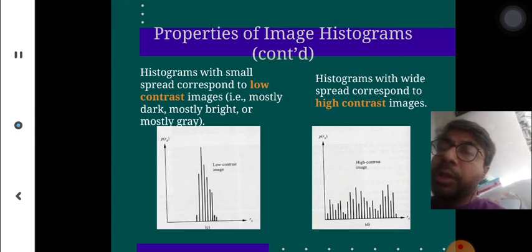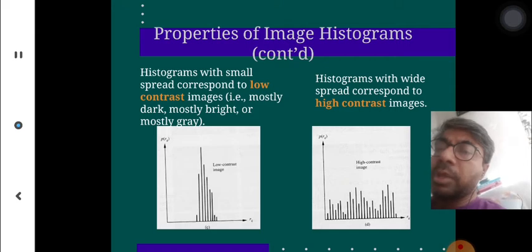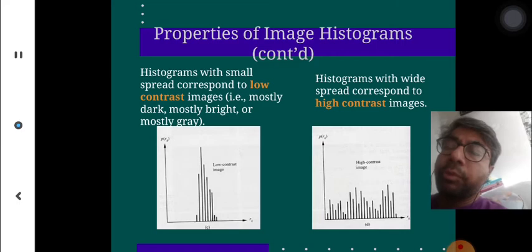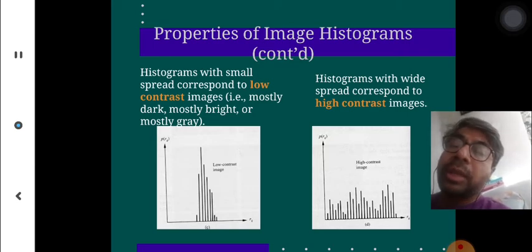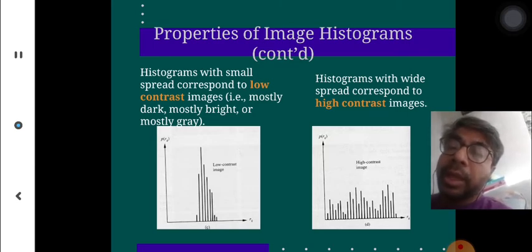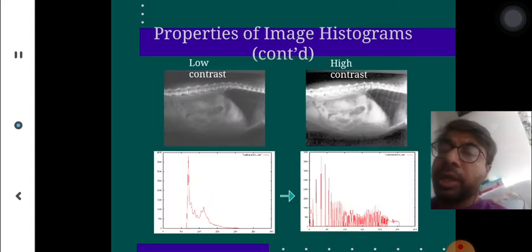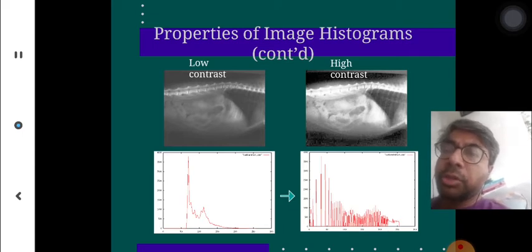Further properties of image histogram: a histogram with small spread corresponds to low contrast — it means mostly dark, mostly bright, or mostly gray, which we can understand by its cluster. A histogram with wide spread corresponds to a high contrast image, because the frequency of gray level is across the entire image, giving us more detail of the image visible. You can see the histogram representation difference between a low contrast image and a high contrast image.